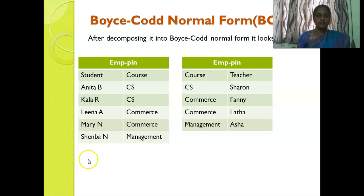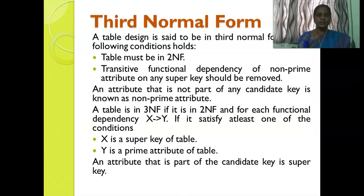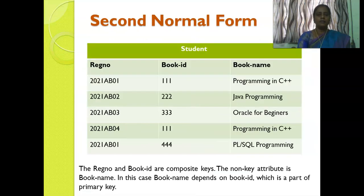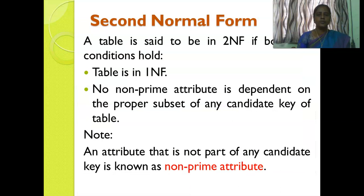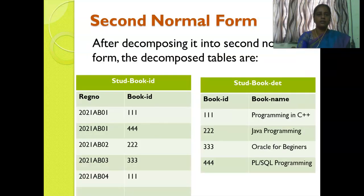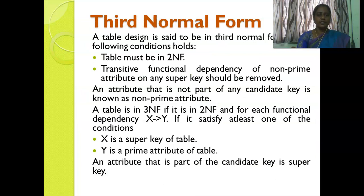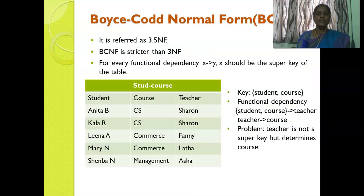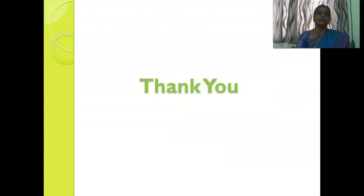In this session we covered: what is normalization and the types, first normal form with example — there should not be multiple values in a cell, second normal form — no non-prime attribute should depend on a proper subset of any candidate key, third normal form — there should not be a transitive functional dependency, and BCNF — every left-hand side of a functional dependency should be a super key. I hope we all understand this session. Thank you.